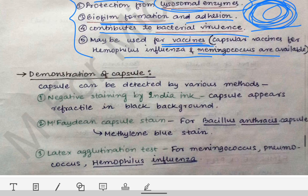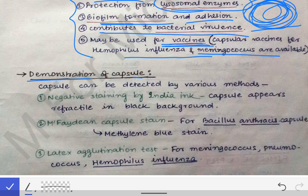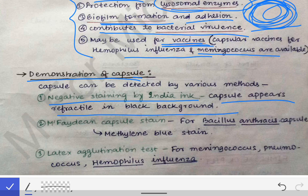The capsule can be demonstrated by different stains. By negative staining using India ink, the capsule appears refractile against a black background. This is one way of demonstrating the bacterial capsule — when stained with India ink, the capsule appears refractile against a black background.